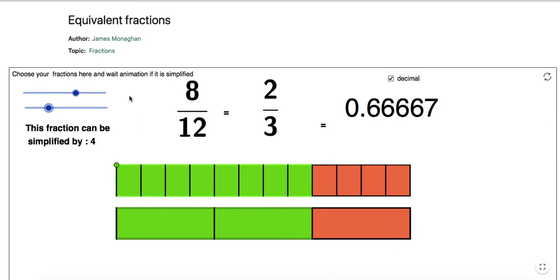So I can show that I have 8/12 fractions. So 8 twelfths is on the top, and it's equivalent to 2 thirds.